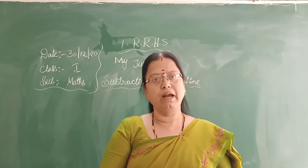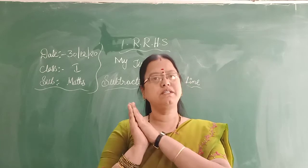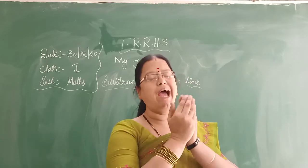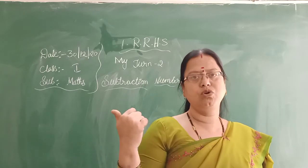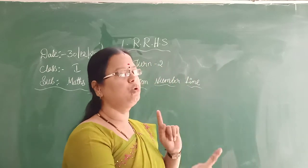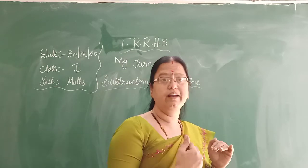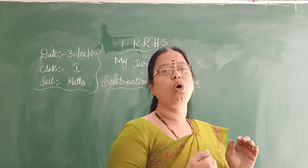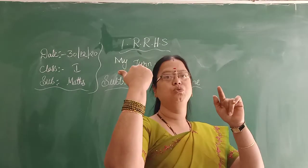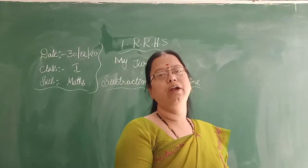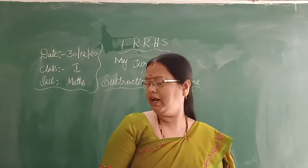So now, subtraction on number line. On number line, always you have to go to the 0 side. You have to take backward numbers and go toward 0. For addition we go to the 10 side, but for subtraction you have to go 0 side — backward. Okay?